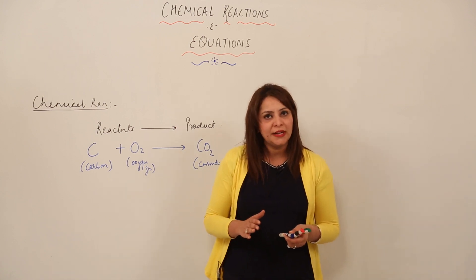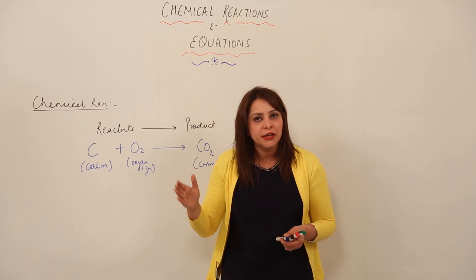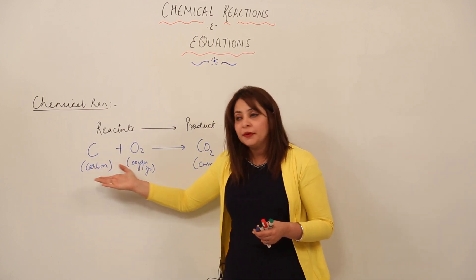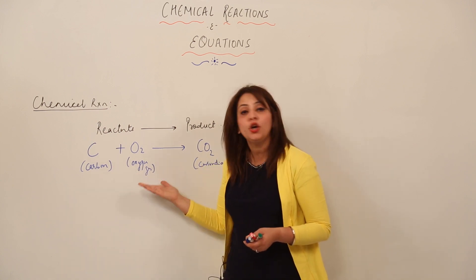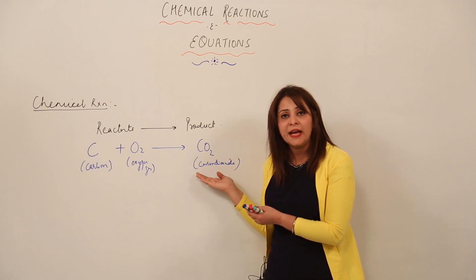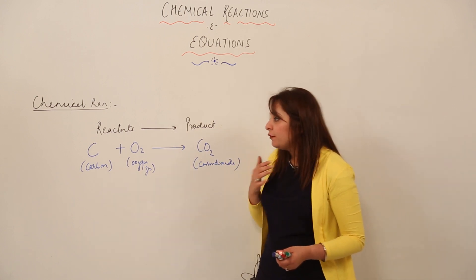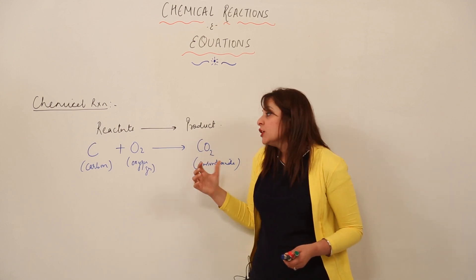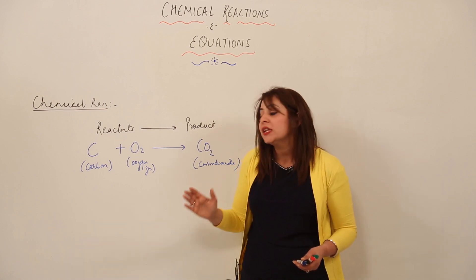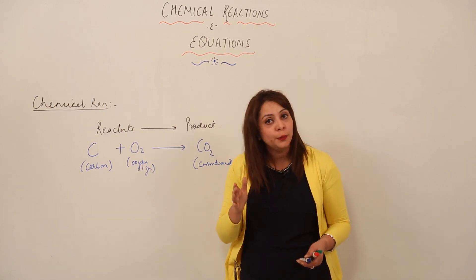The properties of CO₂ are different from those of carbon and oxygen. For example, CO₂ turns lime water milky — that is the test used for carbon dioxide — but this property is not shown by carbon or oxygen alone. So the substance formed as a result of a chemical reaction possesses different properties from its constituents.